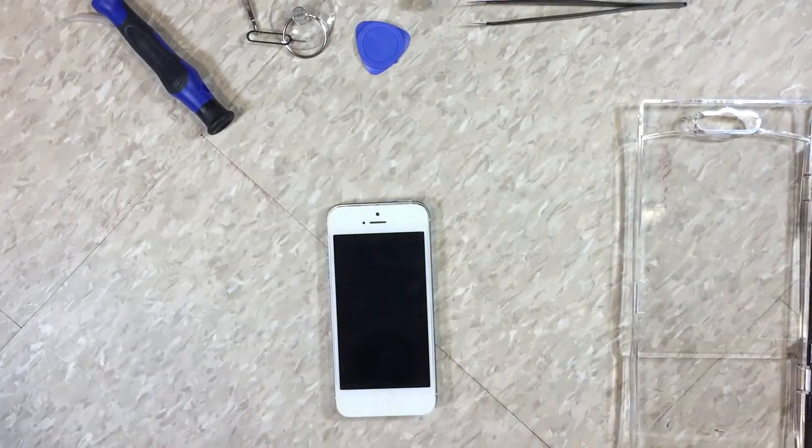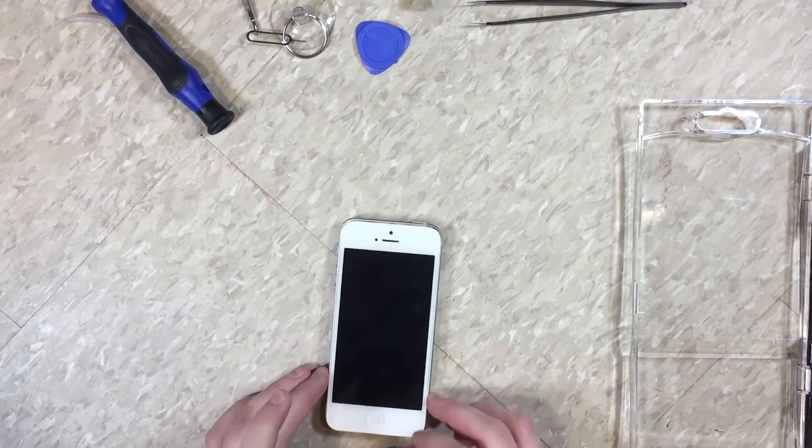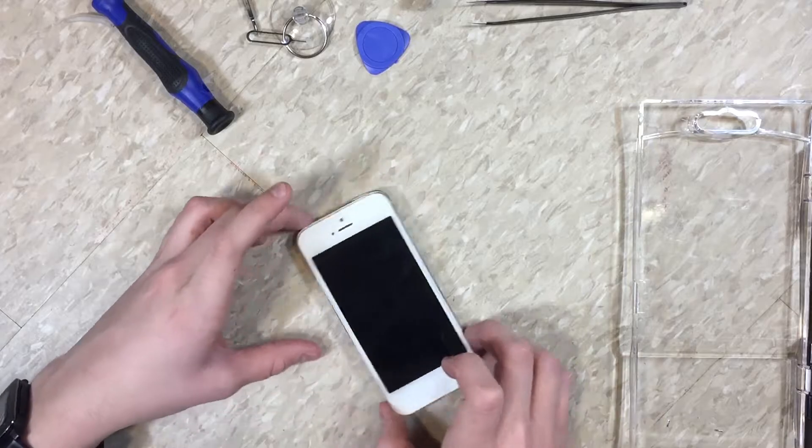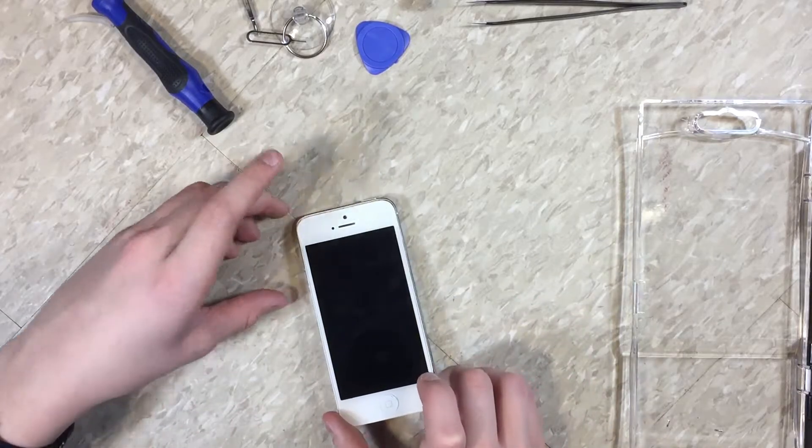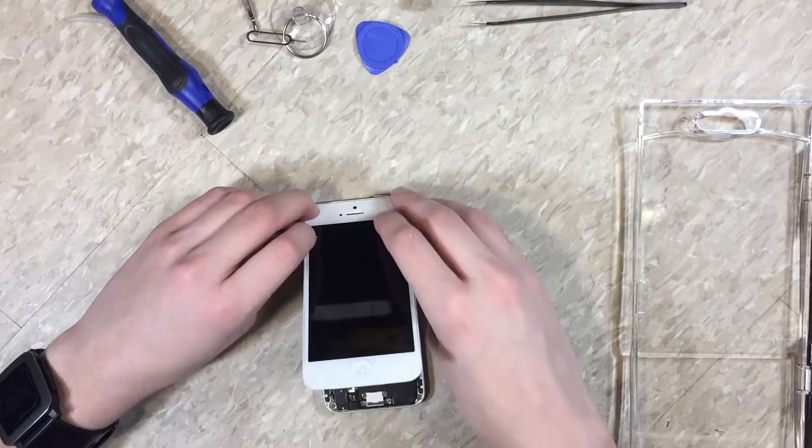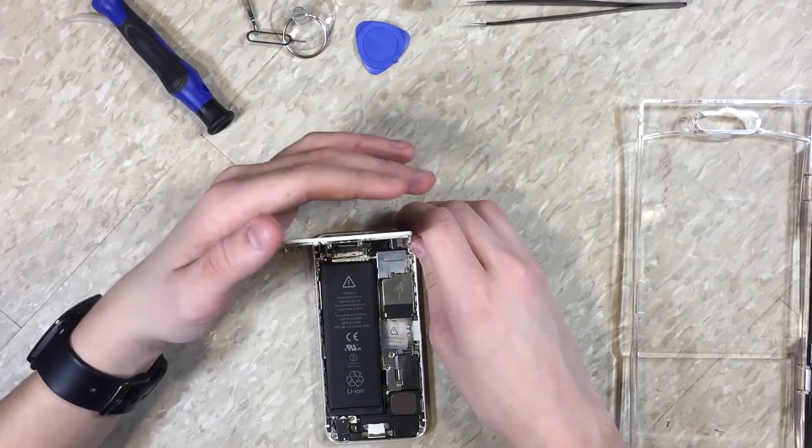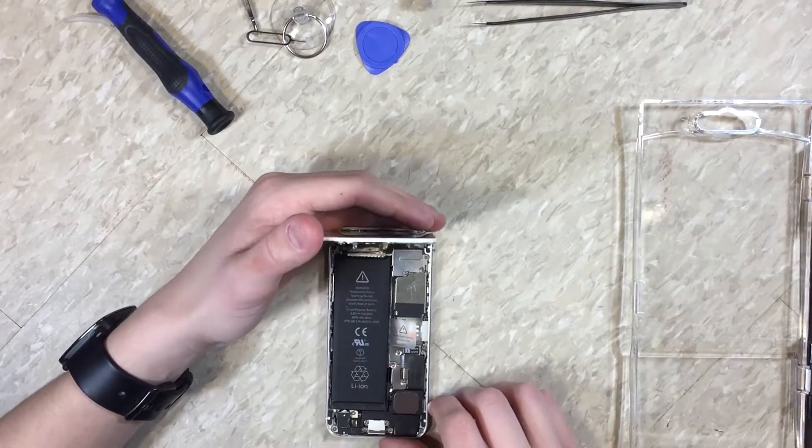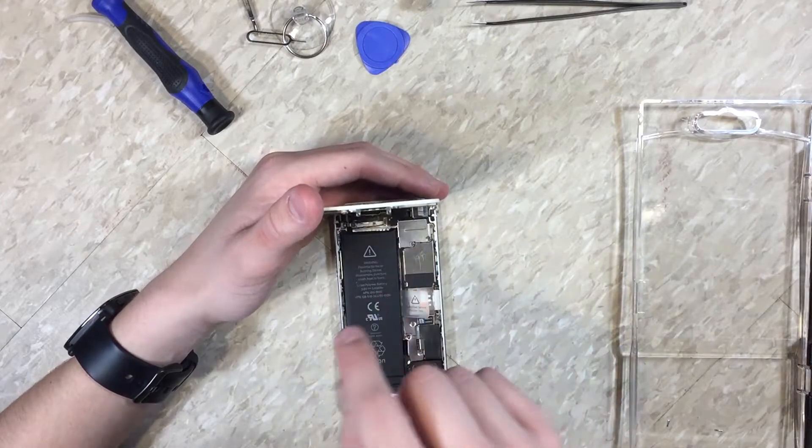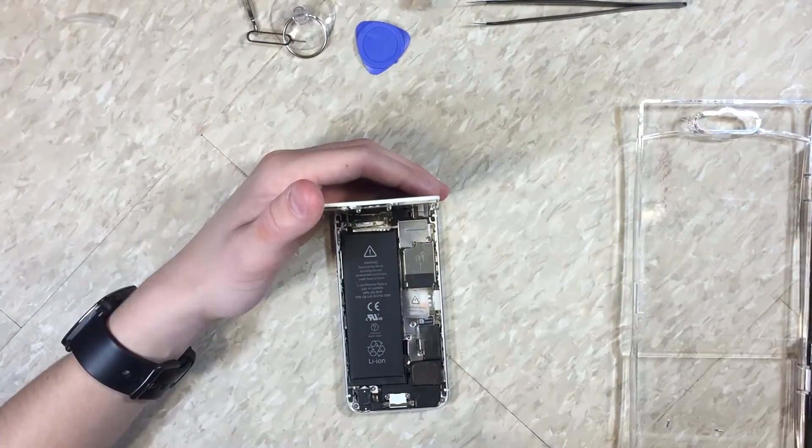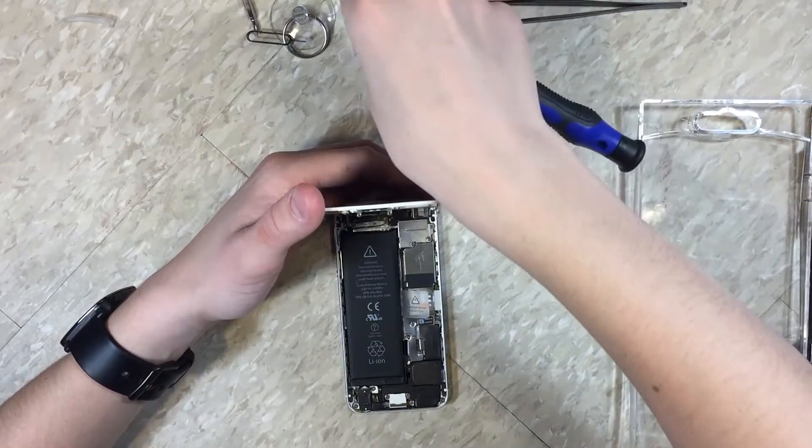Okay, so that was probably the hardest part of the entire project right here. So once you have this unlatched, you can just bring it open, and don't bring it past a 90 degree angle, or you will snap the display ribbon cables right off.